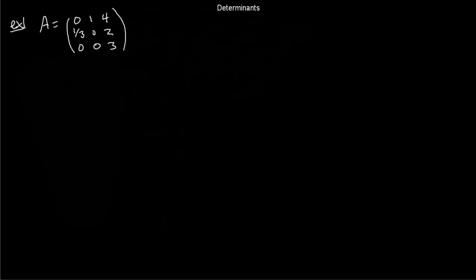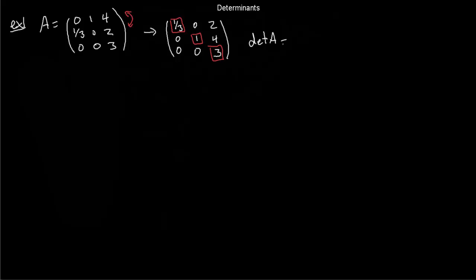Let's see another example — a 3x3 matrix that requires a row swap because the first pivot was 0. Swap the first two rows, keeping in mind the determinant gets an extra minus 1 as a result. After the swap, the matrix is already upper triangular. The determinant of that upper triangular matrix is 1/3 times 1 times 3, which equals 1. So the determinant of A is minus 1 times 1, giving minus 1.